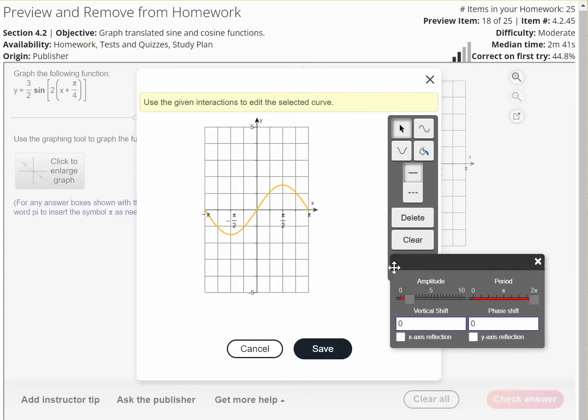And then the period is going to be 2 pi over B, where B is the number here. So 2 pi over 2, that's going to be pi. And so let's move this to pi.